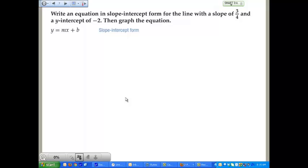So write an equation in Slope-Intercept Form for the line with a slope of 3/4 and a y-intercept of negative 2, then graph the equation. This is really simple. You take y equals mx plus b, you put 3/4 in for your m, and then you plus the negative 2. Let's make the ugly problem pretty by multiplying those signs, so y equals 3/4x minus 2.